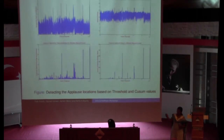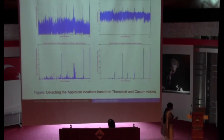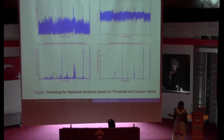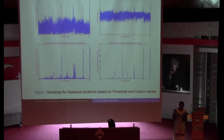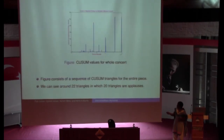Looking at the implementation: applying the CUSUM technique to the spectral flux and spectral entropy plots, wherever peaks appear that is an indication of applause locations. After applying the CUSUM technique completely, the peaks indicate the duration and strength of each applause event. For spectral flux there are some spurious values; currently I have subtracted 1.2 percent of the mean, and if I increase that parameter empirically I can eliminate spurious values. For spectral entropy, 1.2 percent of the mean works fine — I get only the true peak values. In this concert there are 20 triangles corresponding to 20 applause locations.